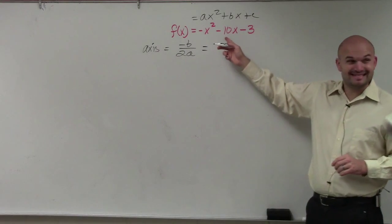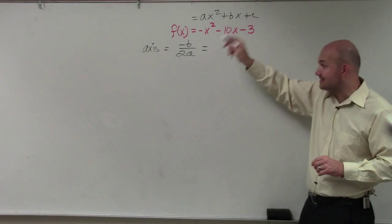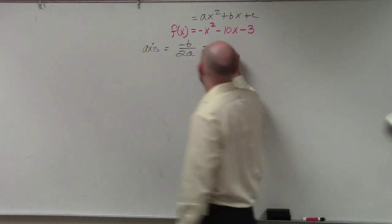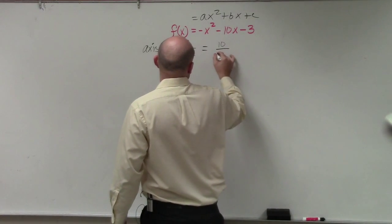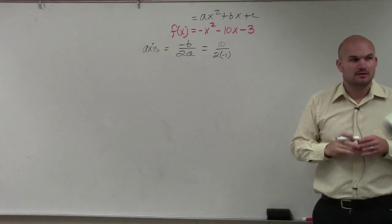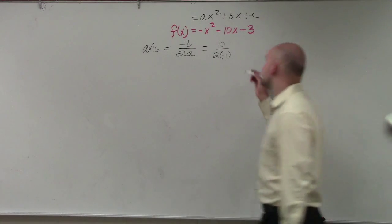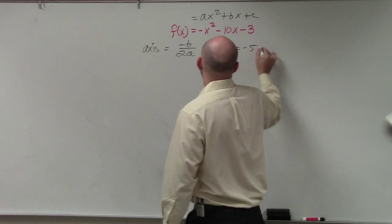So my b is negative 10, not negative 10x. b is the number in front of x. So opposite of b would be a positive 10 divided by 2 times a, which is negative 1. Everybody agree with me, a is negative 1, b is negative 2. Opposite of b is 10. So therefore, this gives you negative 5.